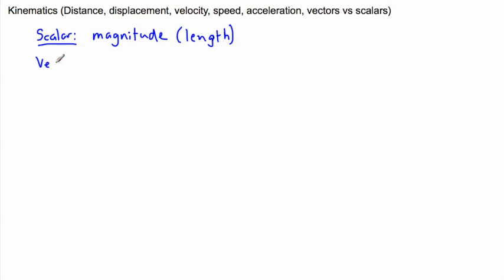Whereas vectors, those are things with magnitude and direction. Magnitude plus direction.